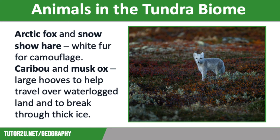Caribou and musk ox also have very large hooves. These enable them to travel over waterlogged land and protect their feet from rotting. They can also use them to break through the thick ice in order to find drinking water. Many species in the tundra also hibernate during the winter, whereas others might migrate to warmer regions, such as birds flying south.